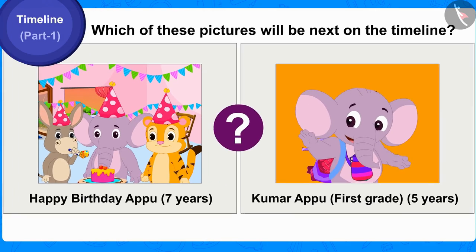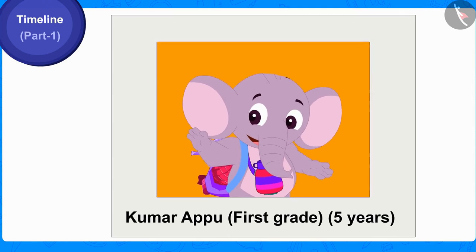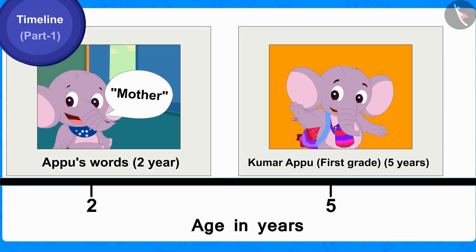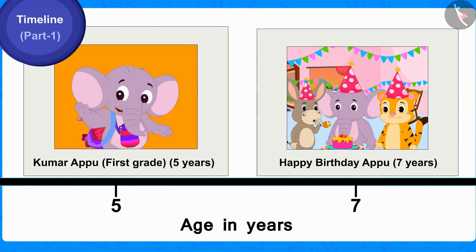And which of these pictures will be next on the timeline? Yes! The picture of Appu in first grade will be shown chronologically next, by writing the age of five years on it. And finally, the picture of Appu's seventh birthday will be shown by writing the age of seven years on the timeline.